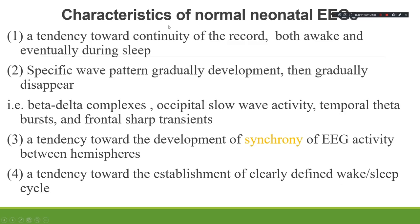The characteristics of normal neonatal EEG include: first, a tendency toward continuity of recording during both awake and sleep states; and second, specific wave patterns that gradually develop and disappear, such as delta brushes or beta-delta complexes, occipital slow wave activity, and temporal theta bursts, which typically occur around 26 to 28 weeks of conceptional age.